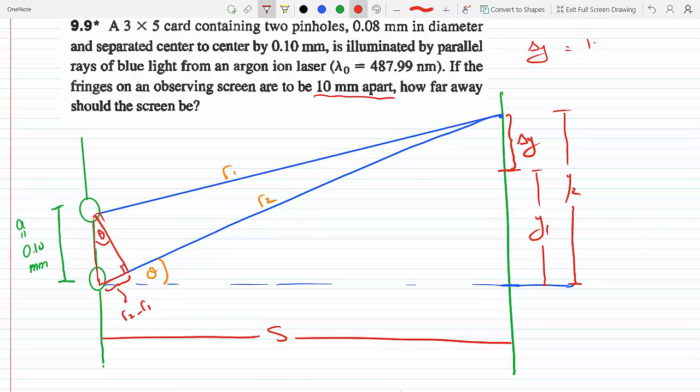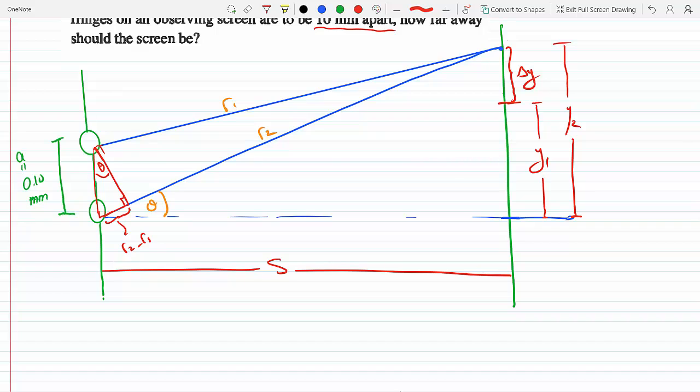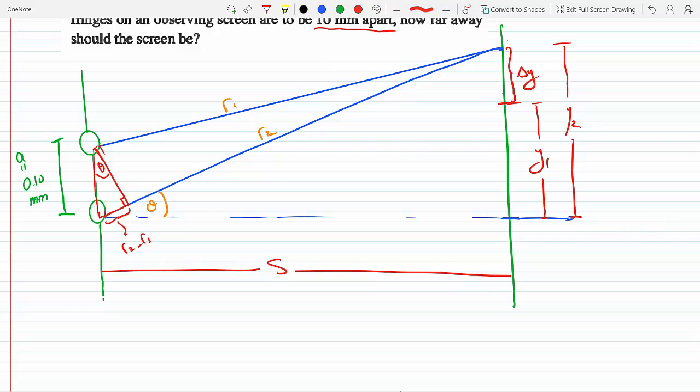So Delta Y between two consecutive fringes is 10 millimeters. The question asks how far should the screen be, so in other words, they're asking what's s. Now I drew the rays r₁ and r₂ corresponding to each one of the slits and the angle that they make—let's say if this here is the x-axis—is theta. I drew this figure many times on the previous questions.